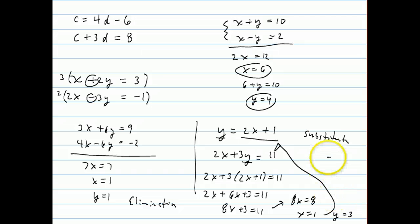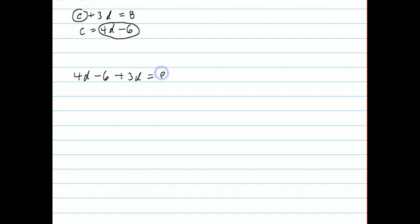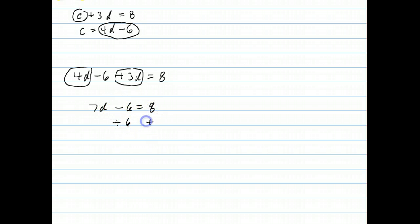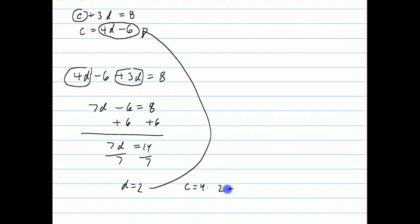Applying substitution to question 12: since c equals 4d minus 6, replace c in the top equation to get 4d minus 6 plus 3d equals 8. Combining gives 7d minus 6 equals 8, then 7d equals 14, so d equals 2. Plugging back in: c equals 4 times 2 minus 6, which is 2. The answer is choice 3.